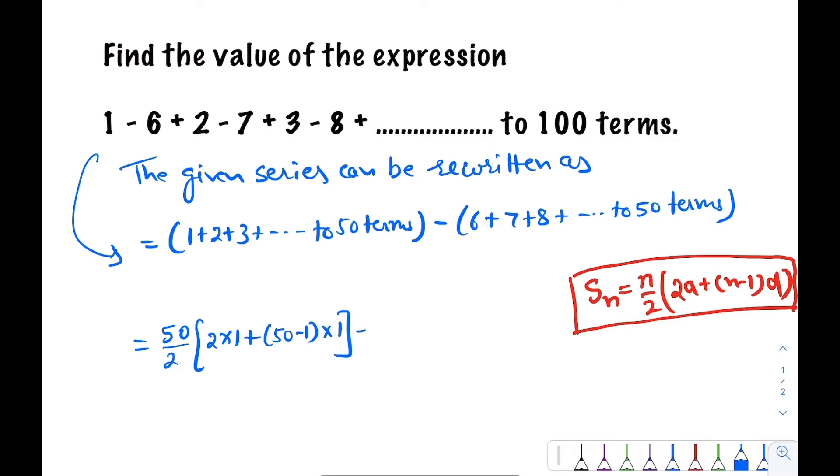In the second series, 50/2, n is 50, a is 6, so 2*6 plus n is 50, so we can write here (50-1)*(50-1)*d which is 1.